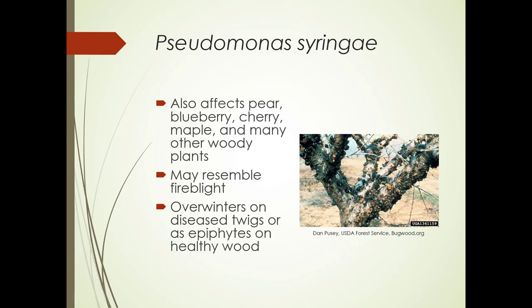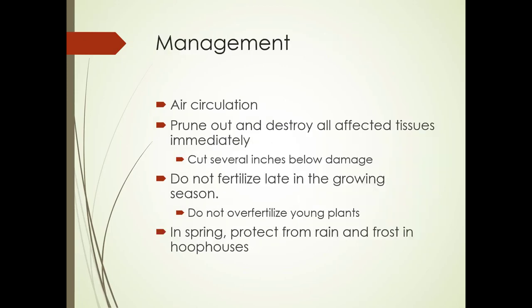This is something that definitely needs to be cut down — you're not going to be able to salvage severely affected plants. Management includes improving air circulation and pruning out and destroying all affected tissues immediately, going at least six inches below the damage. Do not fertilize late in the growing season and don't over-fertilize young plants, as they become more susceptible. In the spring, protect from rain and frost in hoop houses.